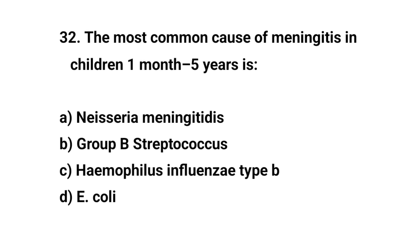Question No. 32. The most common cause of meningitis in children 1 month to 5 years is? The right answer is C: Haemophilus influenzae type B.